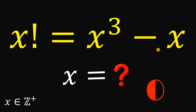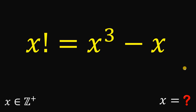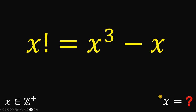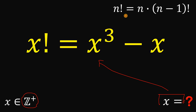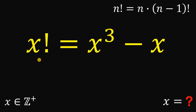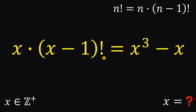Let's answer this question together. Our goal is to solve for the value of x that satisfies x factorial equals x cubed minus x, where x is a positive integer. First, note that n factorial equals n multiplied by n minus 1 factorial. So we can replace x factorial with x multiplied by x minus 1 factorial.